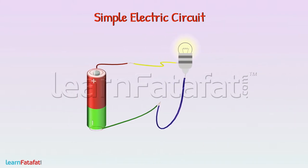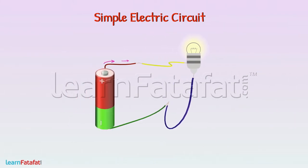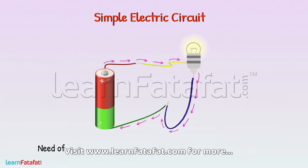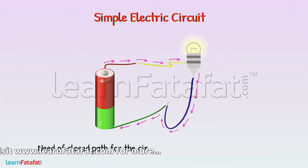You can notice that if we start moving from one terminal of the cell, we reach the other terminal of the cell. That means there is a need for a closed path for the circuit to work and the bulb to light up.